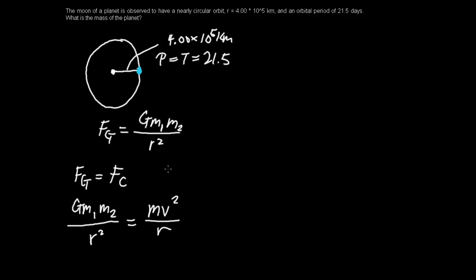Alright, so from here we can divide, and let's set this as one for now because it's the planet, not the moon. Alright, so we can go ahead and cross m2 out, and you can cross r and r, and we would get G times m1 over r equals v squared. Now m1 is the moon.